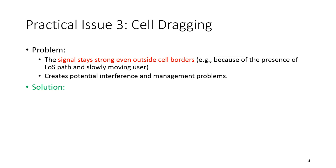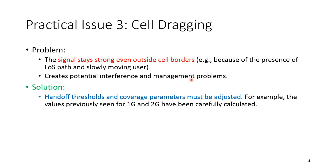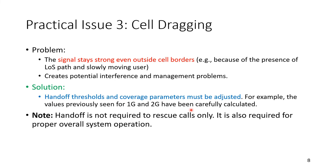The third practical issue is cell dragging. The signal stays strong even outside the cell border due to the presence of a line-of-sight path and slowly moving users — like pedestrians gradually moving away who still receive a strong signal from a distant base station. This creates potential interference and management problems. The solution is that handoff threshold and coverage parameters must be carefully adjusted; the values seen for 1G and 2G have been carefully calculated through experimentation.